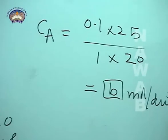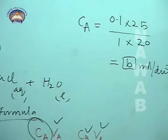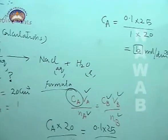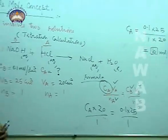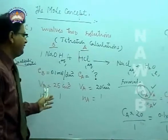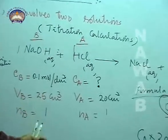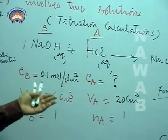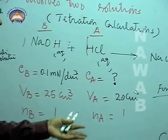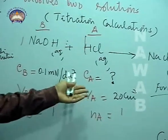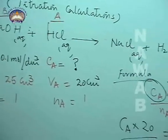So this calculation, this type of calculation, actually your hint is that two solutions are reacting. Two solutions are reacting, in which six things are involved. Out of those six things, if any one thing is unknown to you and the other five things are known, then you can find out any one thing. Thank you.